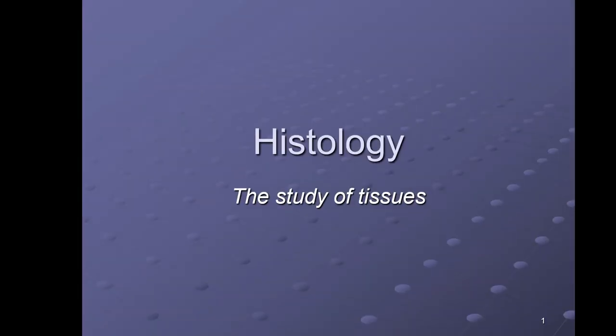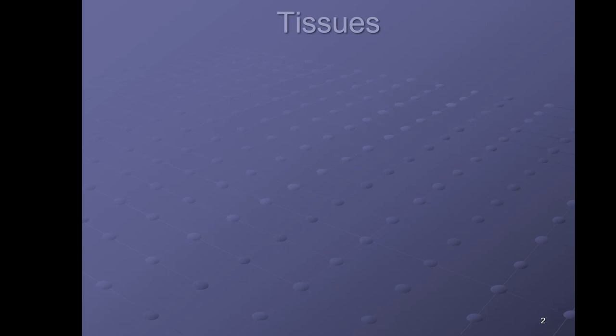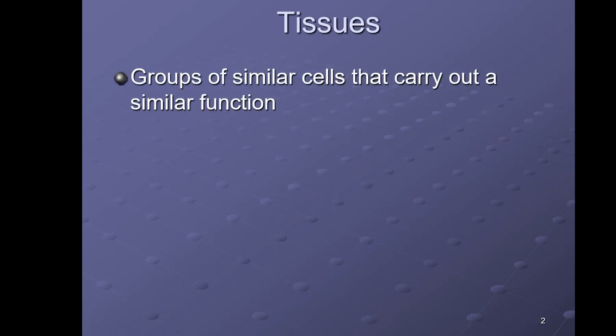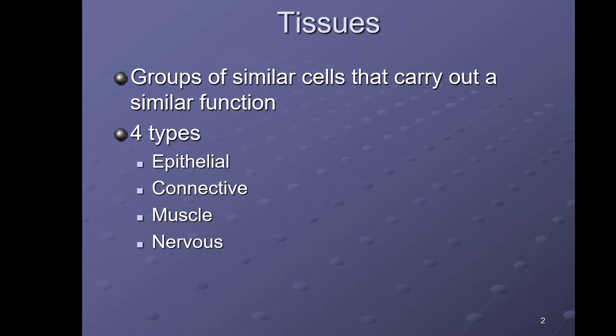We're now moving into our discussion of histology, which is the study of tissues. Previously we talked about cells, and when we covered cytology, remember cells get together and form the next level of organization, which is called tissues. A tissue is a group of similar cells that carry out a similar function, and there are four types in the human body: epithelial, connective, muscle, and nervous.